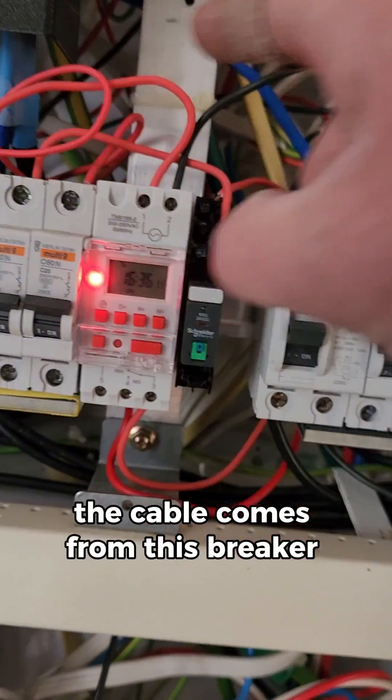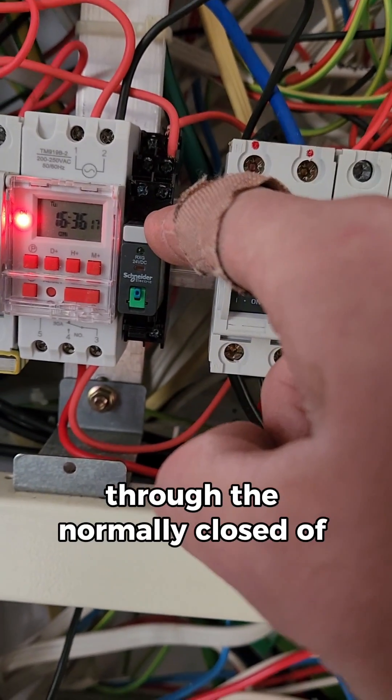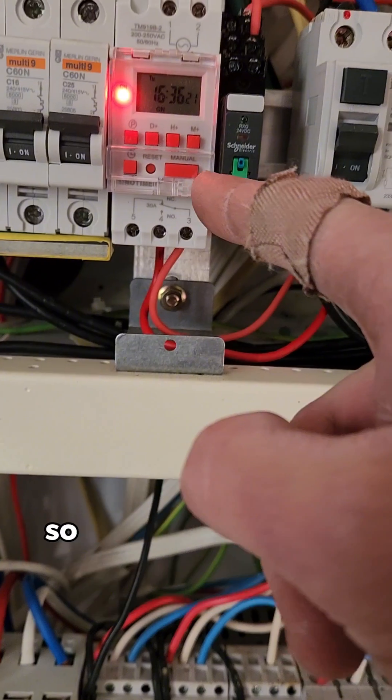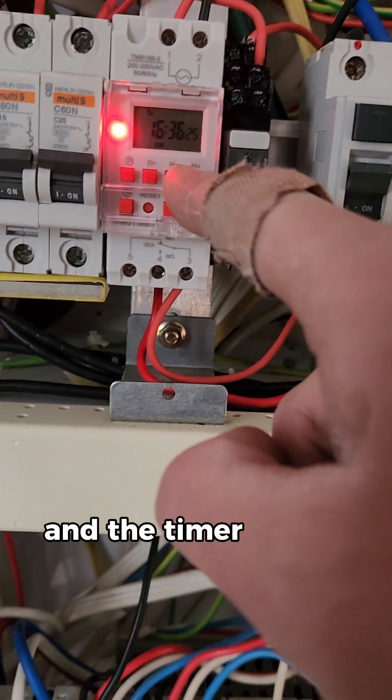The cable comes from this breaker through this contact, through the normally closed of this contact, down through the timer. So this has to be not energized and the timer has to be at the right time.